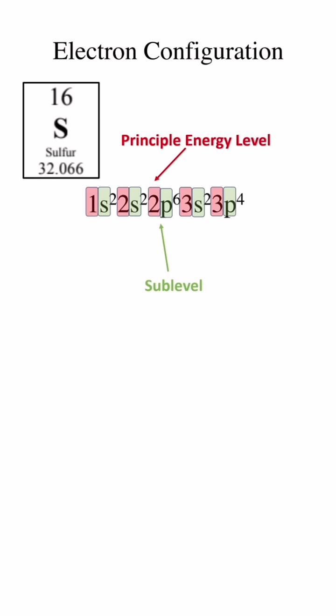These sublevels are in larger principal energy levels. The number of electrons in the sublevel is represented by a superscript number.